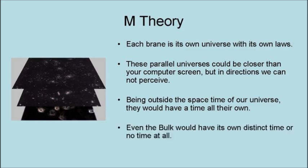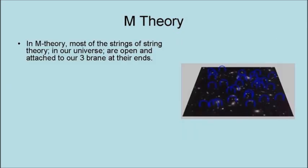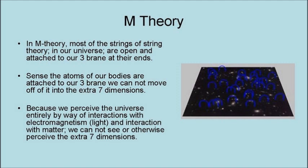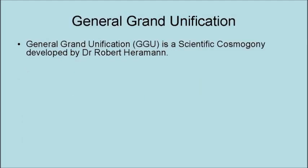In M-theory, most of the strings of string theory in our universe are open and attached to our three-brane at their ends. Since the atoms of our bodies are attached to our three-brane, we cannot move off it into the extra seven dimensions. Because we perceive the universe entirely by way of interactions with electromagnetism - that is light - and interactions with matter, we cannot see or otherwise perceive the extra seven dimensions.